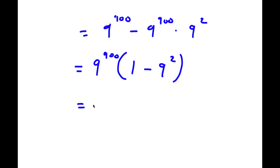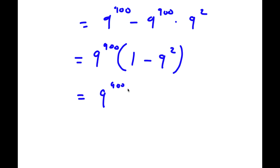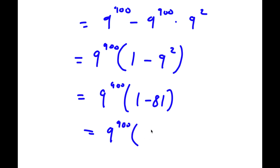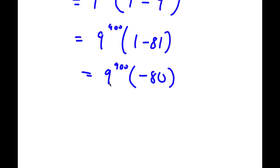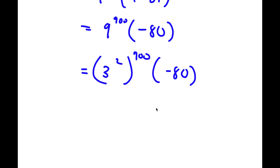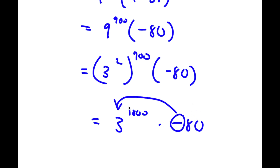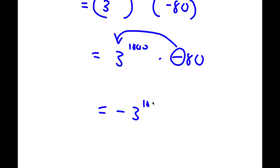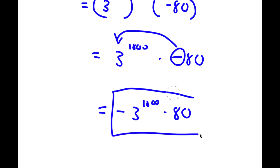Now, 9 to the power of 2 is simply equal to 81. So now I have 9 to the power of 900 times 1 minus 81, and 1 minus 81 equals negative 80. So I have 9 to the power of 900 times negative 80. Now, 9 is the same thing as 3 to the power of 2, so I have 3 to the power of 2 to the power of 900 times negative 80, which simplifies to 3 to the power of 1800 times negative 80, or negative 80 times 3 to the power of 1800. So this is my answer.